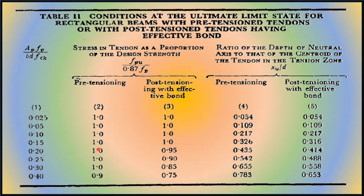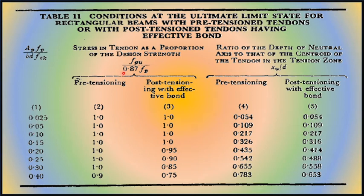When the effective reinforcement ratio falls between tabulated values, interpolation is needed for FPU/(0.87 FP) or XU/D. For pre-tensioning, ratios between 0.025 and 0.3 give a value of 1.0, and between 0.3 and 0.4 we can take 0.95 for FPU/(0.87 FP). For post-tensioning with effective bond, interpolation is required for both columns.